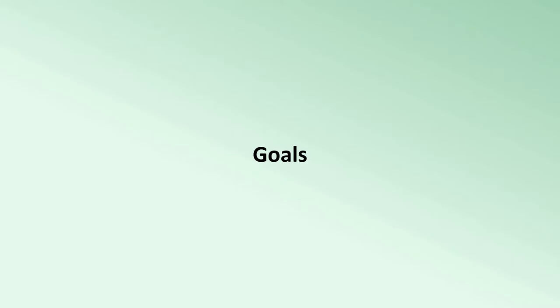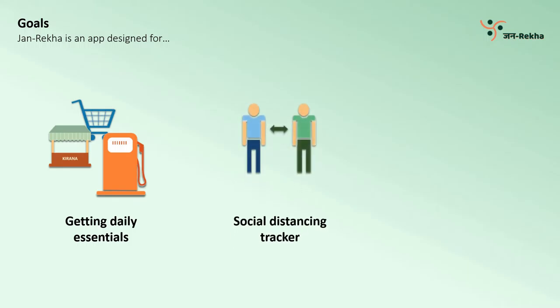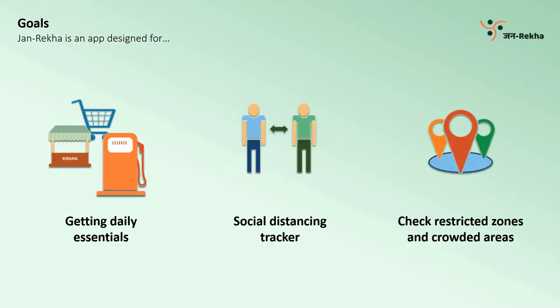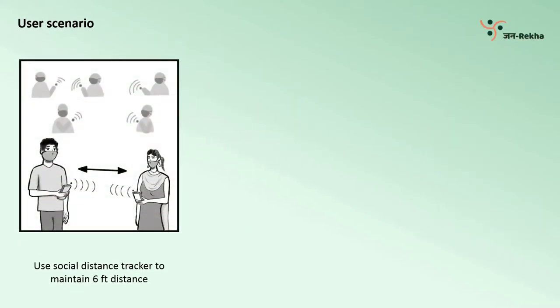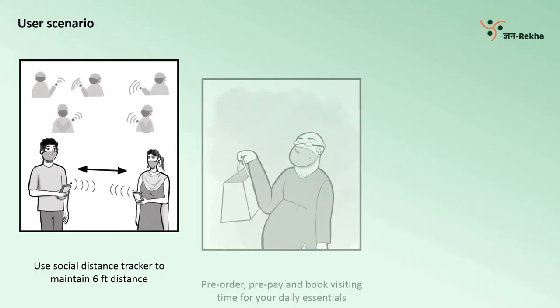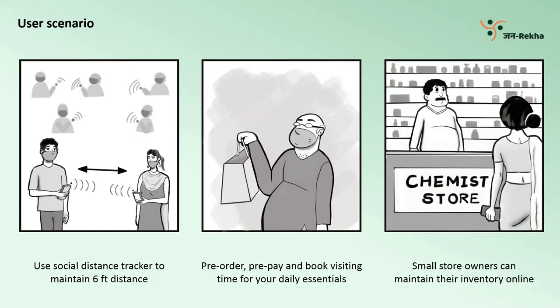First, we will talk about the goals that our app focused on achieving. Jan Rekha is designed to help a user get daily essential items while avoiding crowds at stores, social distance at crowded areas, and look for crowded areas to plan your journey before stepping out of your home. Users can maintain a safe 6 feet distance from other app users in crowded areas. People can pre-order, prepay, and book visit times to collect their orders from local stores. Small shop owners can maintain their inventory online and manage bookings from the app.